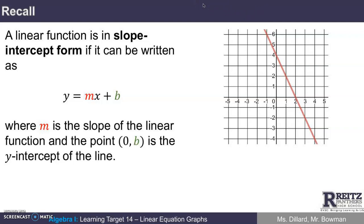This flavor of solving the problem needs a little bit of recall on your part. You need to remember that a linear function is in slope-intercept form if it can be written as y equals mx plus b, where m is the slope of the linear function, and the point (0, b) is the y-intercept of the line.